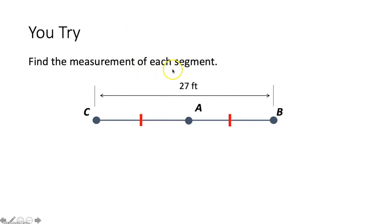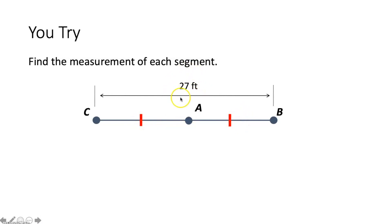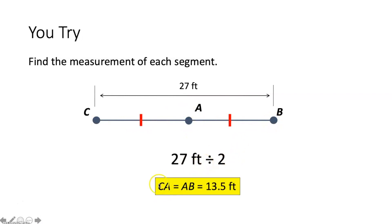We need to find the measure of each segment — segment CA and segment AB. The measure of segment CB is 27 feet, and those red tick marks mean that segment CA is congruent to segment AB, so they have the same measure. To find the measure of each, we take 27 feet divided by two. So the measure of segment CA equals the measure of segment AB, which is 13.5 feet.